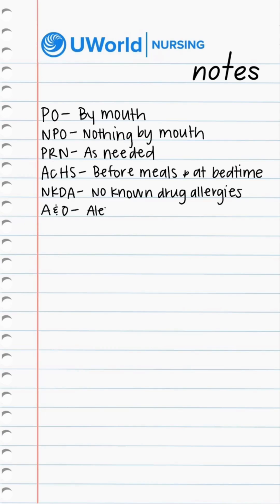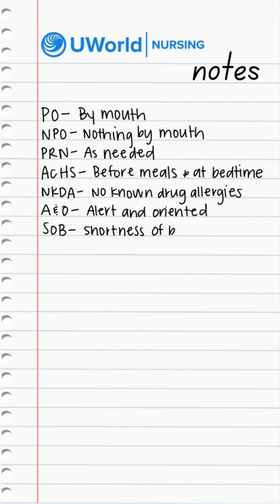ANO means alert and oriented and is used to describe our client's mental status. SOB means shortness of breath and is used to describe our client's respiratory status. VSS means vital signs stable — vital signs are stable.